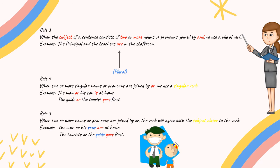Rule number 5. When two or more nouns or pronouns are joined by or, the verb will agree to the subject closer to the verb. In the example, the man or his sons are at home. Here, sons are two or more pronouns, which is closer to the verb, which will be used as the word are.